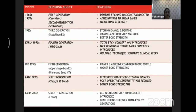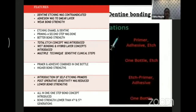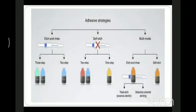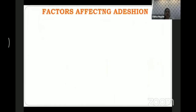Different generations of bonding agents exist from first through seventh generation. Earlier generations used one-step and two-step etching and did not achieve adequate bond strength. The fourth and fifth generations have good bond strength. The sixth and seventh generations are self-etch priming systems. Adhesive strategies vary across generations and involve different combinations of etching, priming, and bonding. Factors affecting adhesion include wettability — wetting is essential for adhesive mechanisms and micromechanical interlocks.